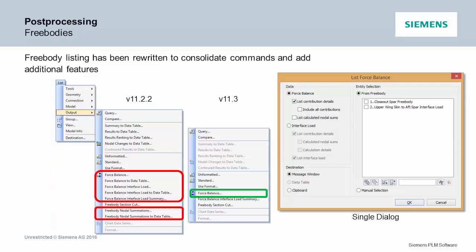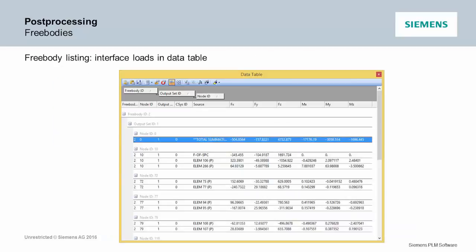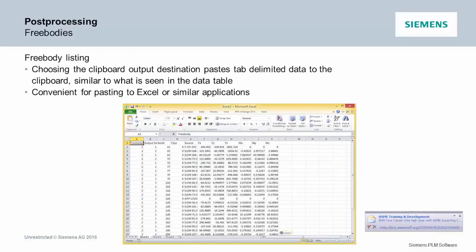There are some new listing options. We've consolidated what used to be all these different commands into one nice box — you can list your free body data much easier. Besides the window, you can automatically send it to the clipboard or the data table, which is nice when you're working with free body forces. The listing, when going to the data table, actually mimics the F06 file. So anyone used to looking at NASTRAN printed results for free body information and grid point force balance — Femap will now output the same format for cut and paste.